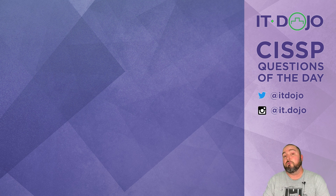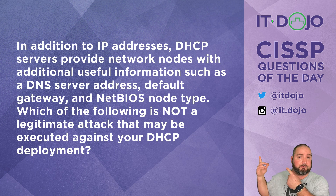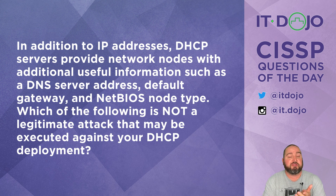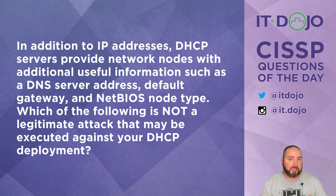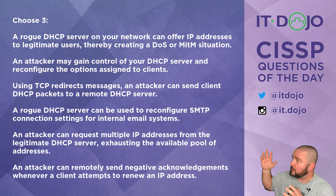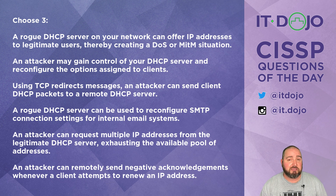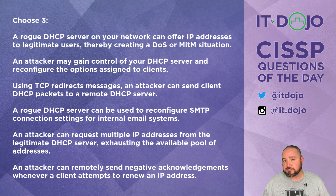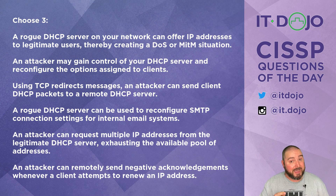Here comes question number two. In addition to IP addresses, DHCP servers give out other useful things to nodes on the network, like a default gateway and the location of a DNS server — the list goes on and on. DHCP can be a big target on your network. Given this long list of possibilities, which of the following are NOT attacks that can occur against your DHCP server? Click pause, figure out what the answer is — there are three of them — and then click play and we'll break it down.